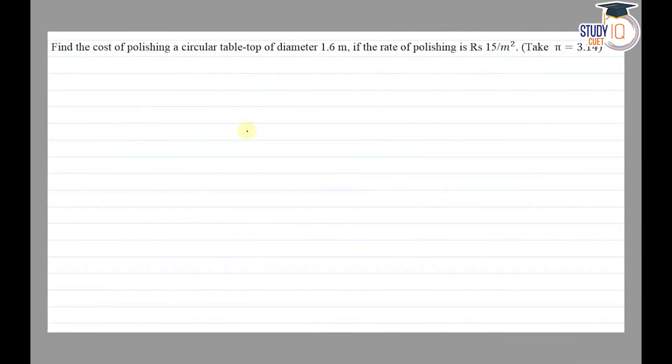Hello everyone, this question appears in Class 7th NCERT chapter of Perimeter and Area. This is question 8 of exercise 11.3. The question says: Find the cost of polishing a circular table top of diameter 1.6 meter